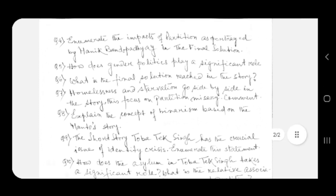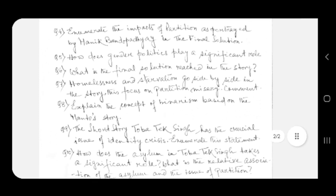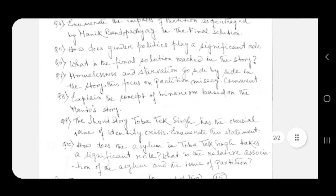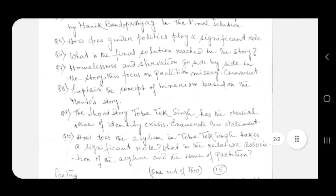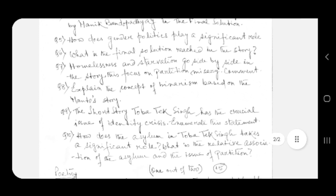Question number eight: explain the concept of binarism based on Manto's story. Question number nine: the short story Toba Tek Singh has the crucial issue of identity crisis. Enumerate this statement.